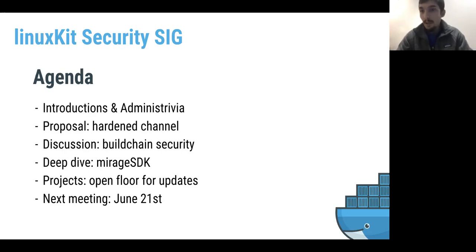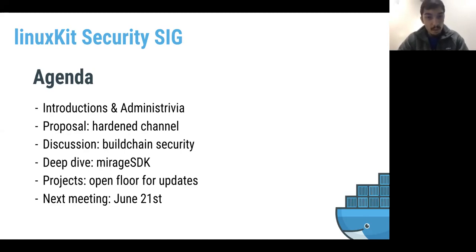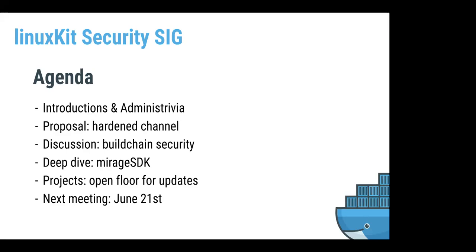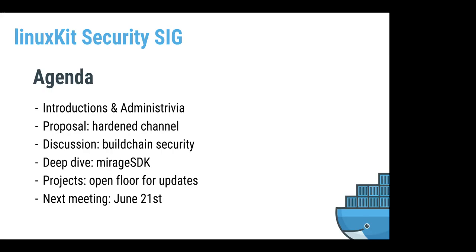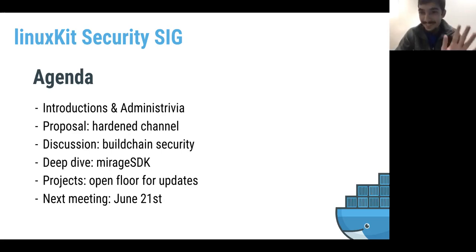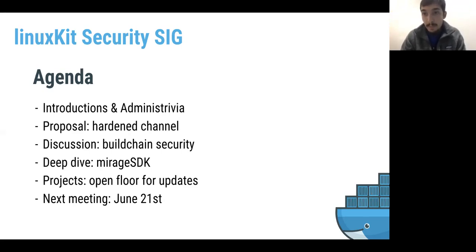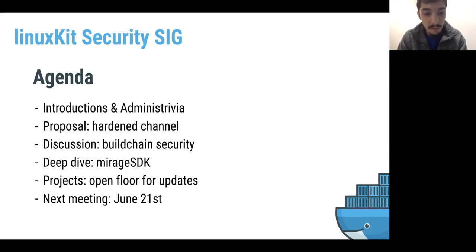For future meetings, we have other agendas there and you're free to contribute. Today we have a proposal that we touched on last time about a hardening channel, which is now called the probationary channel, from Casey's suggestion. Lorenzo brought up some discussion about build chain security. We have a treat — a deep dive on the Mirage SDK project — and then we'll leave a few minutes for open discussion and a sneak peek at the agenda for next time.